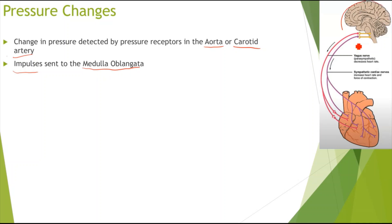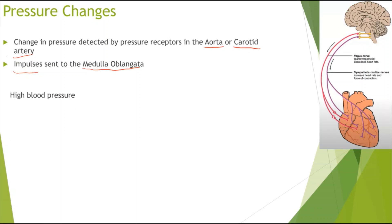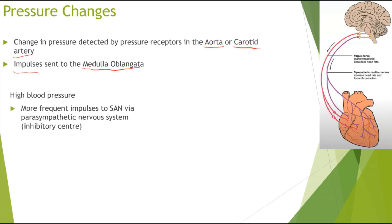Because of the change detected by the pressure receptors, impulses are sent to the medulla oblongata in the brain. In the case of high blood pressure, which could be due to stress, more frequent impulses will be sent to the SAN via the medulla oblongata, via the parasympathetic nervous system.